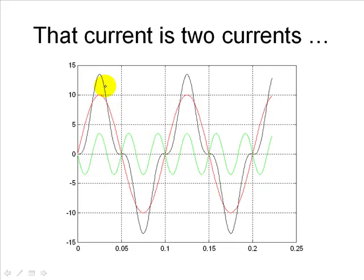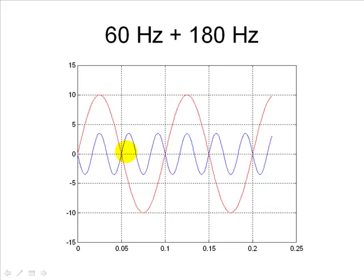We say the magnetization current actually is the sum of two sinusoidal currents. One that is a 60 Hz current, the red one, the fundamental frequency one. And another one, the green one, that is oscillating three times as fast as the fundamental one. We call this a triple frequency current magnetization. And these are the two components of that magnetization current.